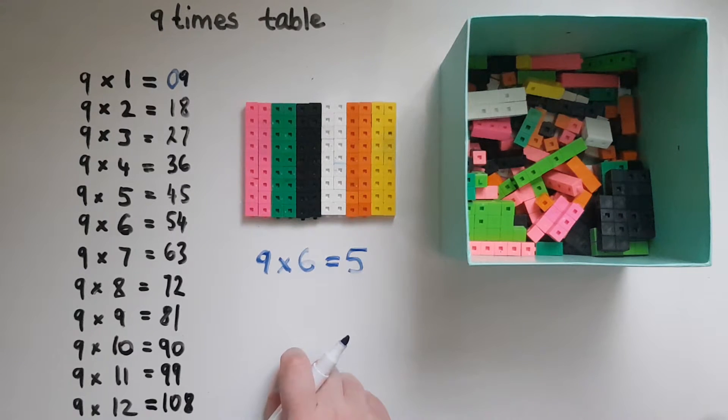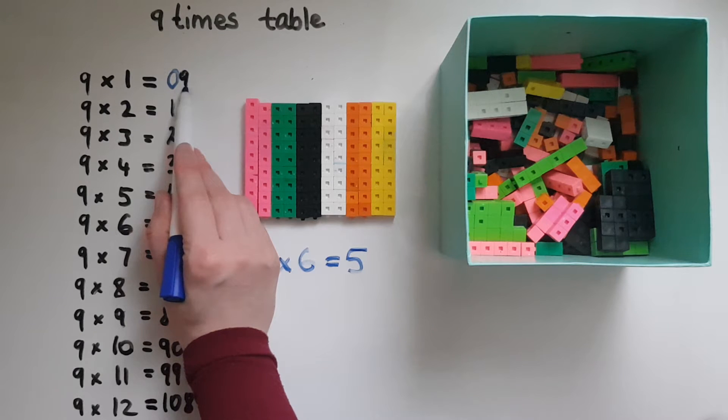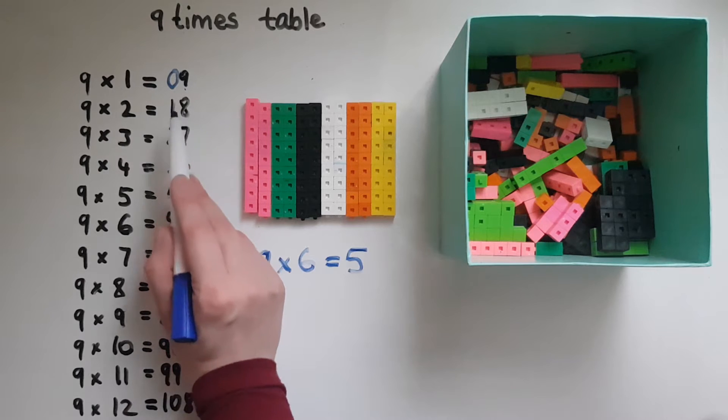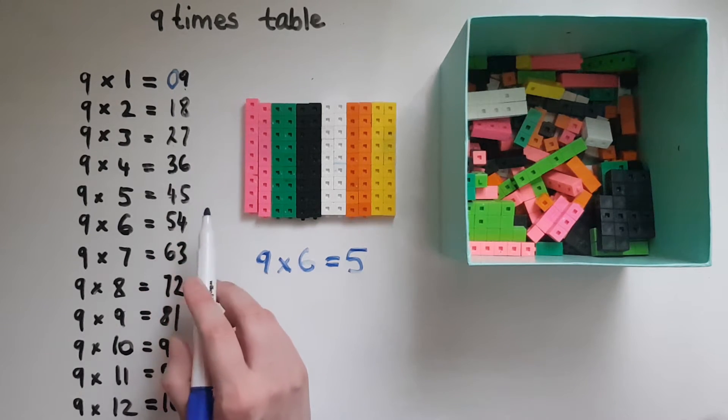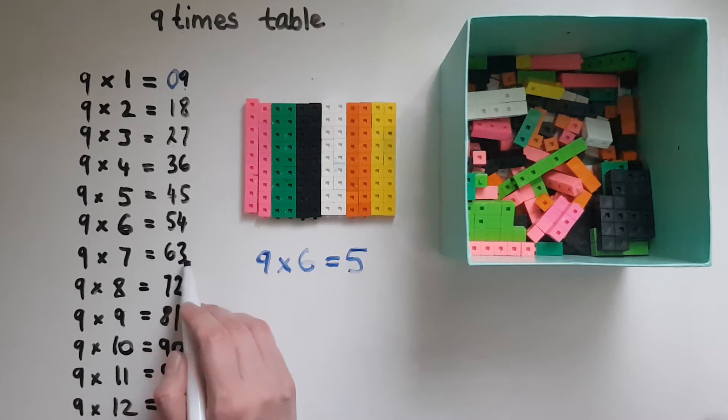Also, looking at the pattern, 0 and 9 added together gives us 9. 1 add 8 gives 9. 2 add 7 gives 9. 3 add 6 gives 9. 4 add 5 gives 9. 5 add 4 gives 9. 6 add 3 gives 9. 7 add 2 gives 9. 8 add 1 gives 9. 9 add 0 gives 9.